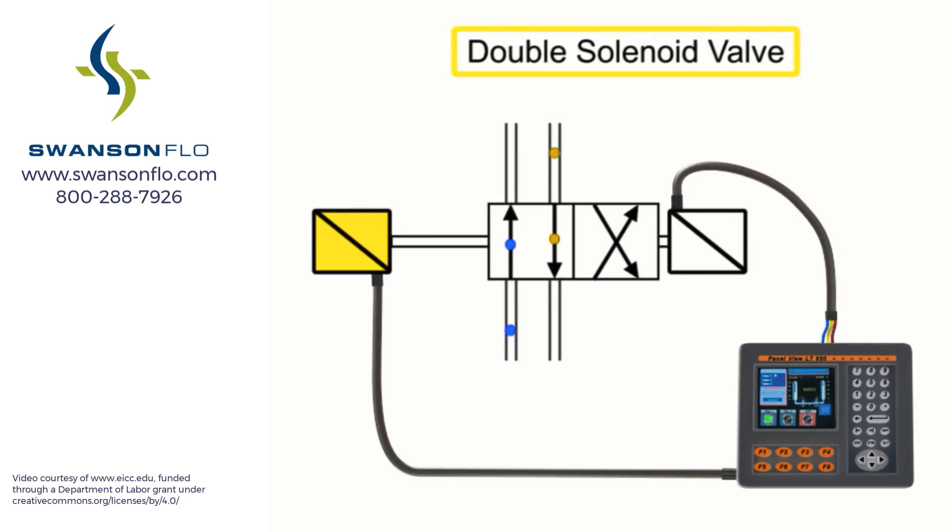Double solenoid valves have two solenoids, typically mounted on opposite ends of the valve body. This type of two-position double solenoid valve does not have a spring return. When the first solenoid is energized, the valve spool shifts into the first position.